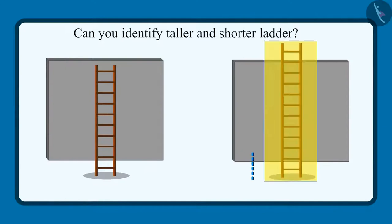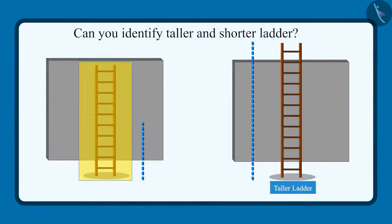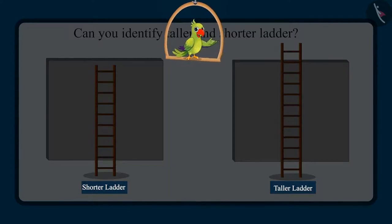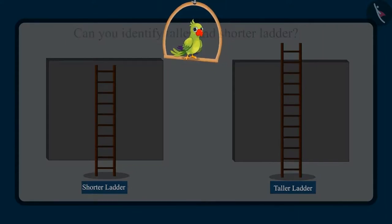And out of these two ladders, this ladder is taller and this ladder is shorter. So children, I hope that you enjoyed identifying and comparing taller and shorter objects. Now you can identify the tall and short objects around you and compare them to tell which is taller and which one is shorter.